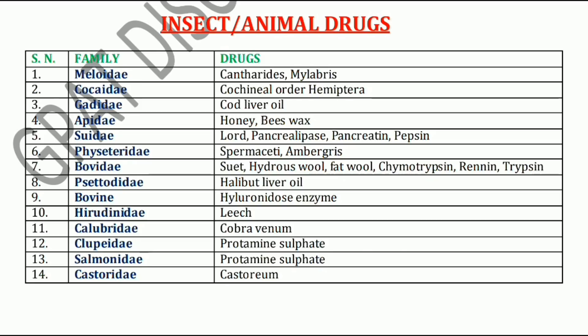Next, Gadidae family. Gadidae family includes Cod liver oil. Apidae family — Honey and Beeswax. Suidae family has Lard, Pepsin, Pancreatin, and Pancreolipase. Next, Physeteridae family. Physeteridae family includes Spermaceti and Ambergris. Bovidae family includes Suet, Hydrosol, Fatol, Chymotrypsin, Renin, and Trypsin.